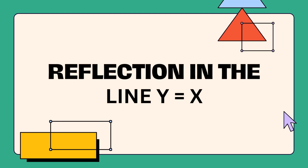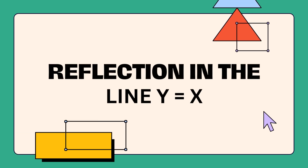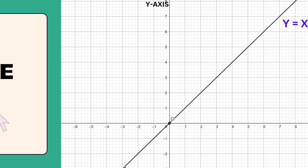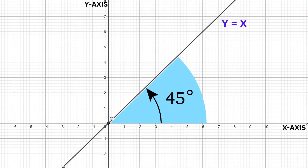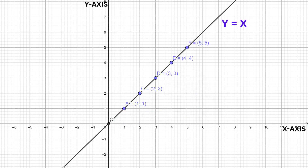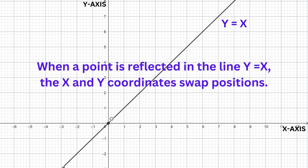Let us now look at how to reflect a shape in the line y equals x. This line is a diagonal line that passes through the origin and has a 45-degree angle with both the x-axis and y-axis. All points on this line have the same x and y coordinates. When we reflect a point over this line, its x and y coordinates switch places.